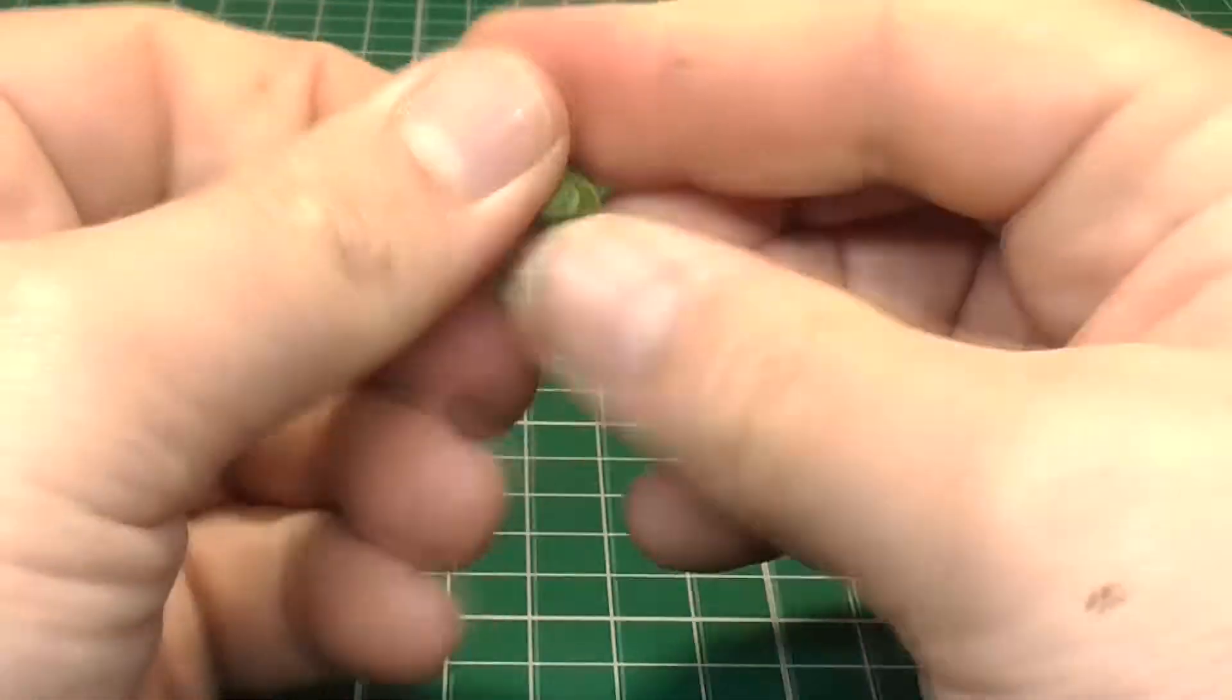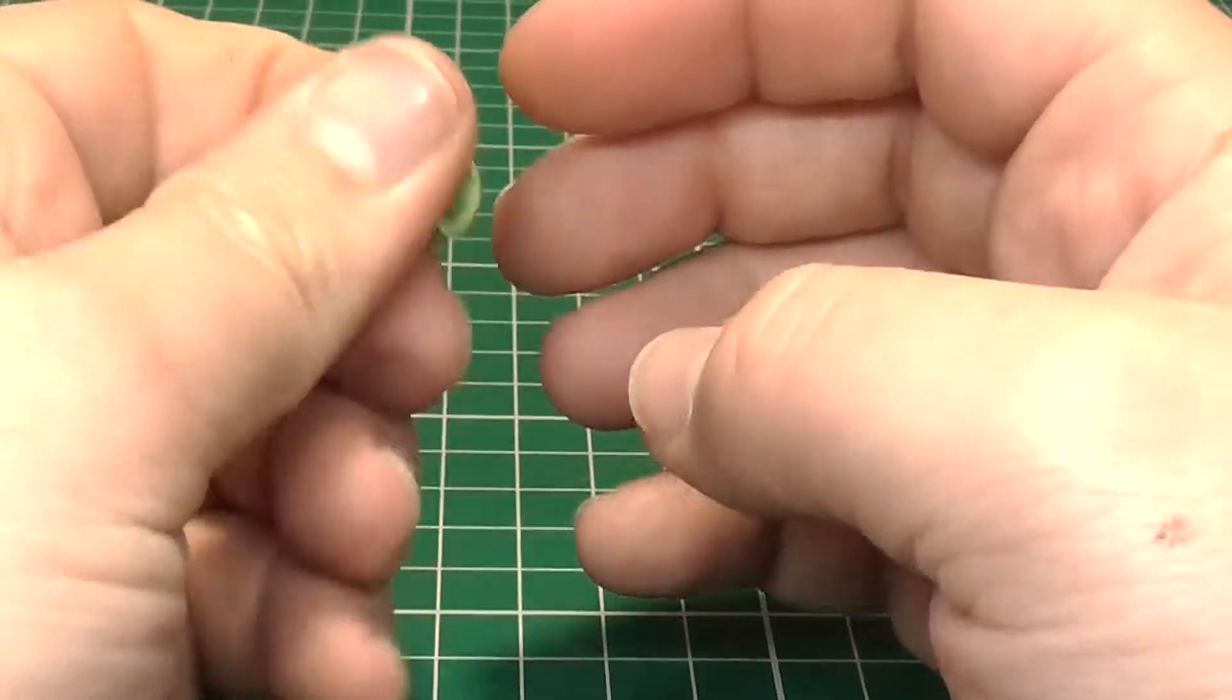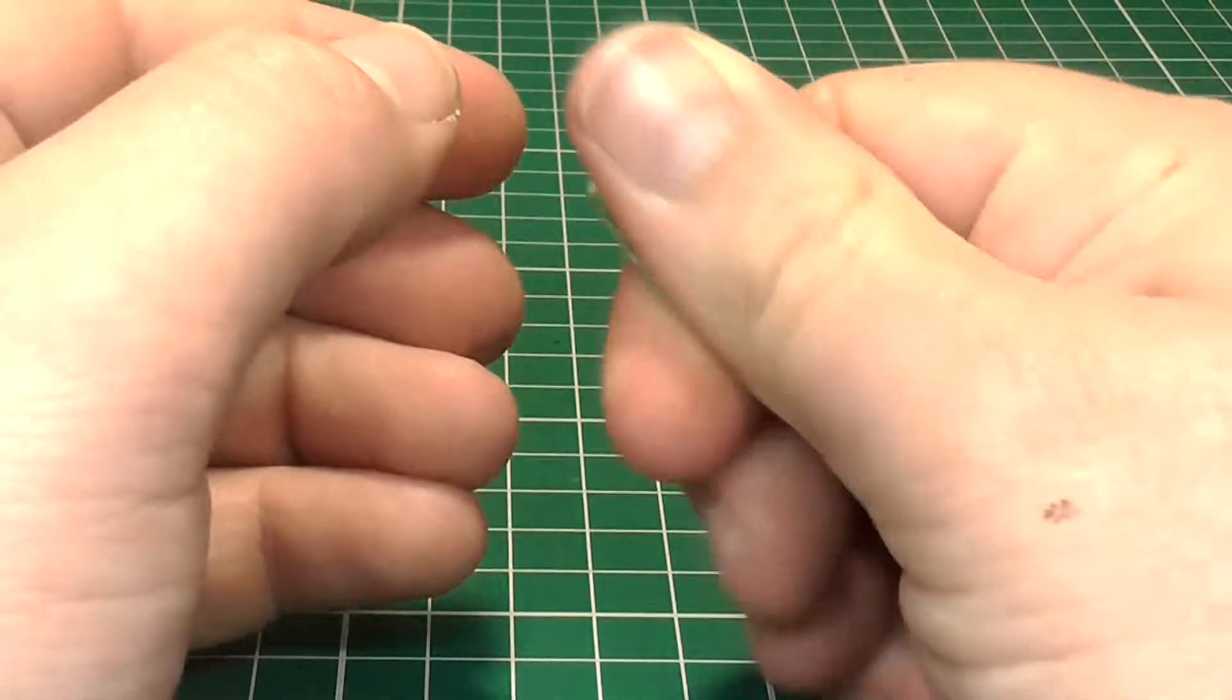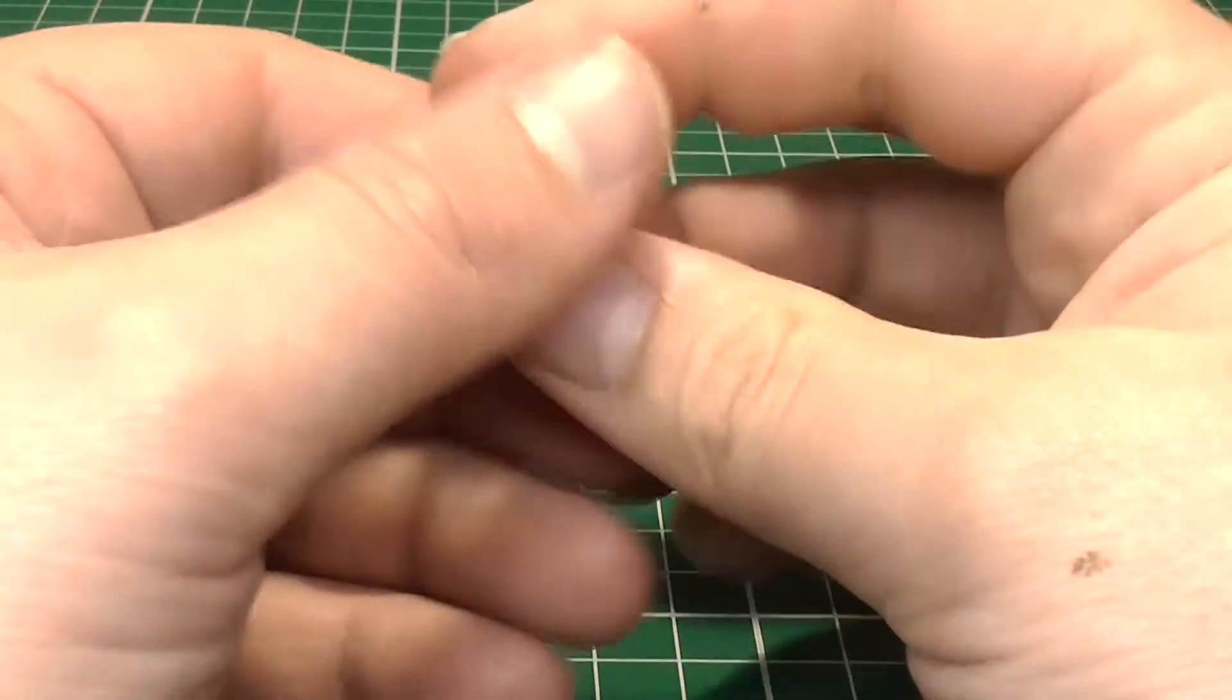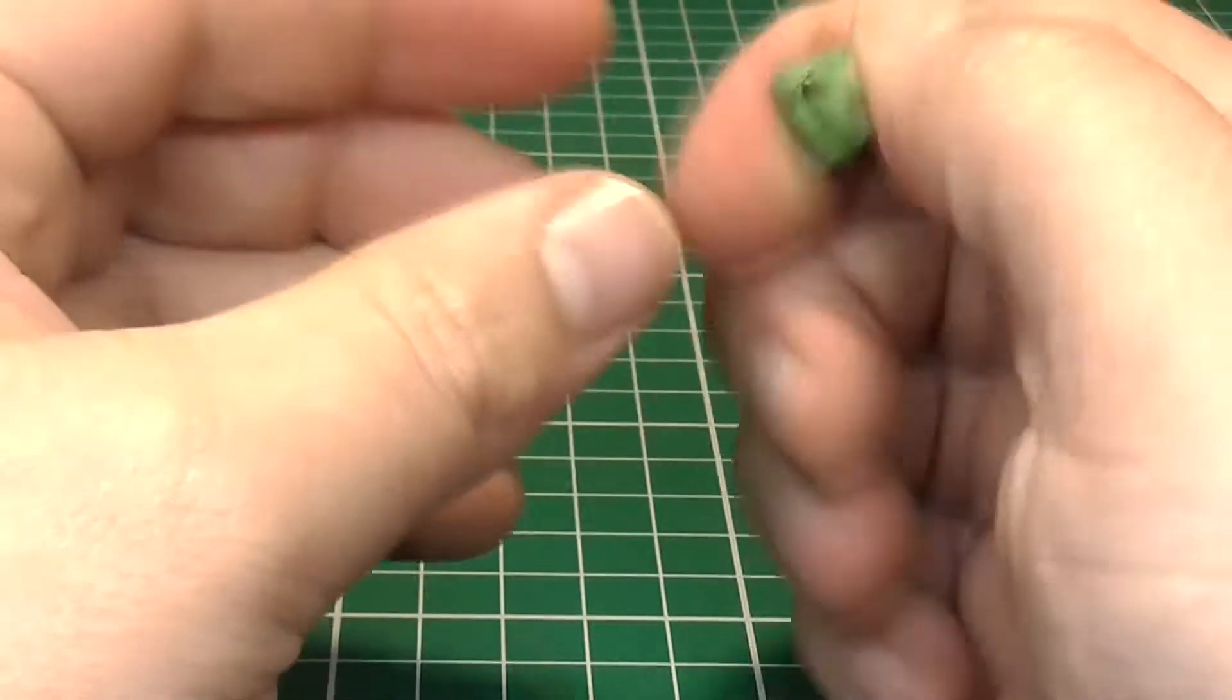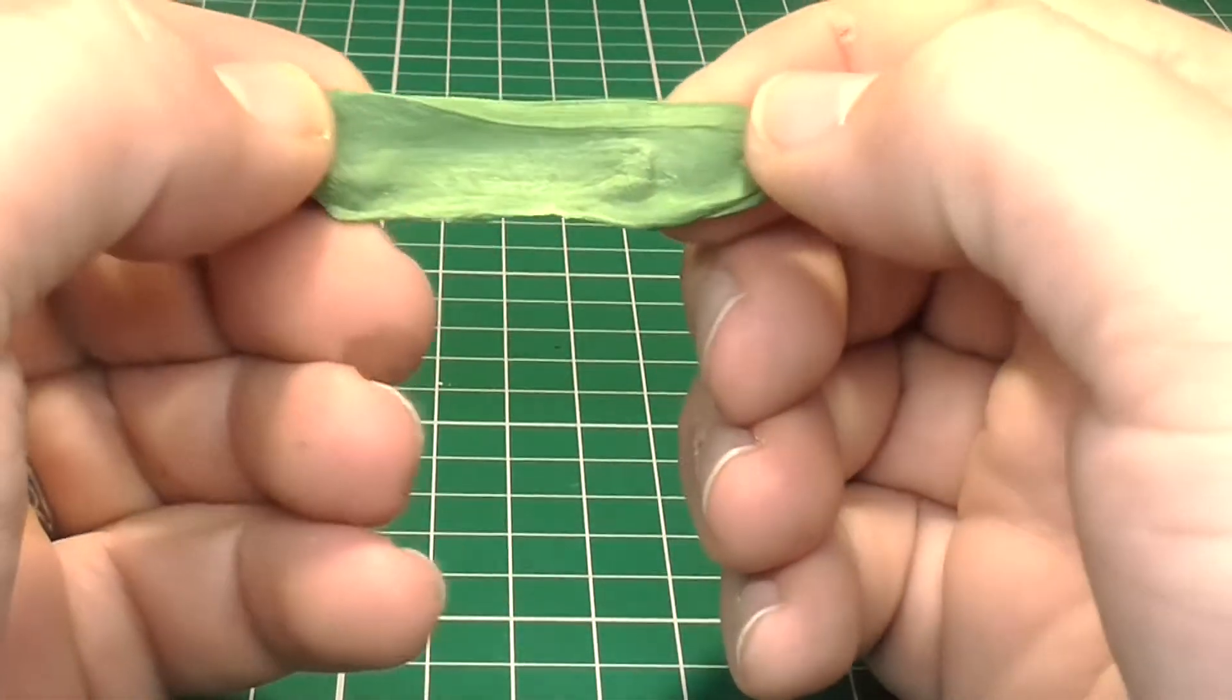Now, I believe the blue part is the hardener. So, if you add more blue to your green stuff, not only will it go a darker green, but it will actually dry a lot harder and a lot quicker. If you want it to be a lot softer and have a lot more playtime with it, you add more yellow to it. But, as you can see, it's gone pretty much one solid color in only a short time.